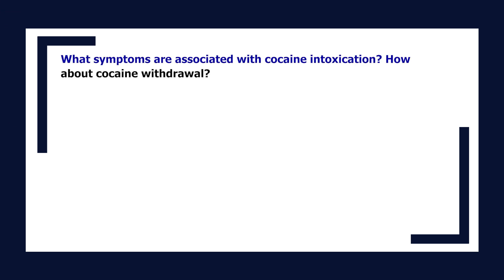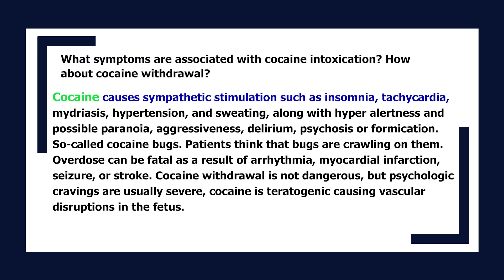What symptoms are associated with cocaine intoxication and withdrawal? Cocaine causes sympathetic stimulation: insomnia, tachycardia, mydriasis, hypertension, and sweating, along with hyper-alertness and possible paranoia, aggressiveness, delirium, psychosis, or formication (so-called cocaine bugs — patients think bugs are crawling on them). Overdose can be fatal due to arrhythmia, myocardial infarction, seizure, or stroke. Cocaine withdrawal is not dangerous, but psychological cravings are usually severe. Cocaine is teratogenic, causing vascular disruptions in the fetus.